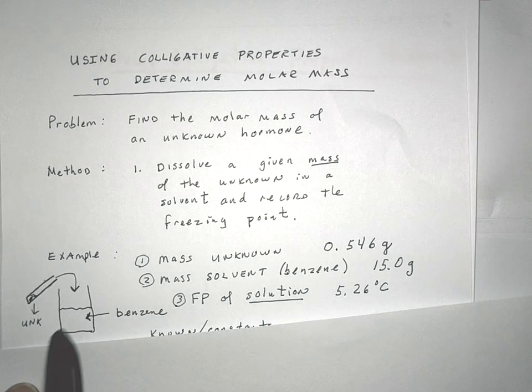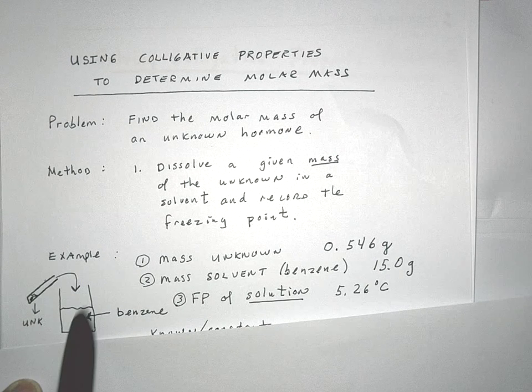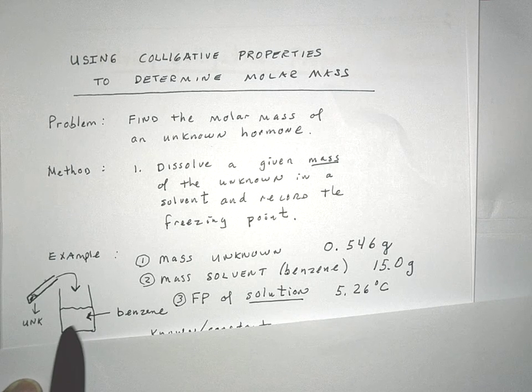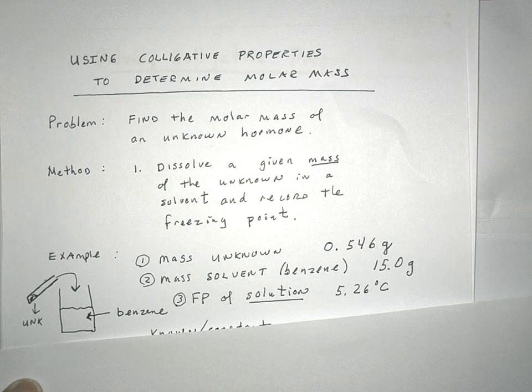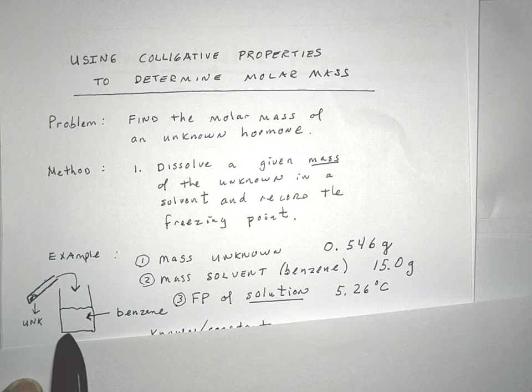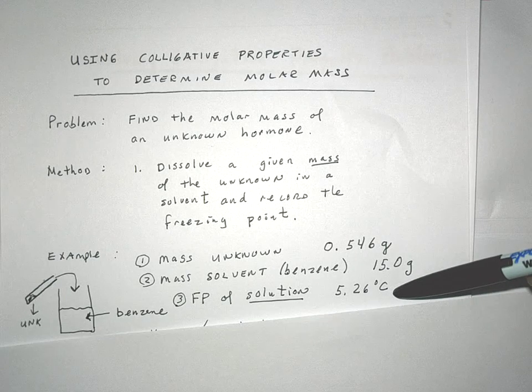So we have our benzene as a liquid. We've measured the solid. We've placed this solid into the benzene as the solvent. We've stirred it up, put a thermometer in there. A process by which we cooled it, and we recorded at what temperature this solution froze. And again, it froze at 5.26 degrees.